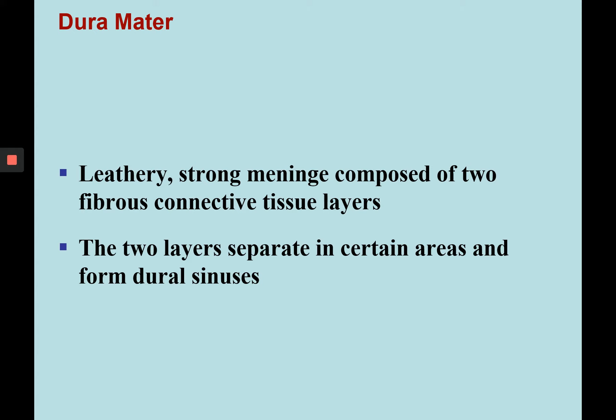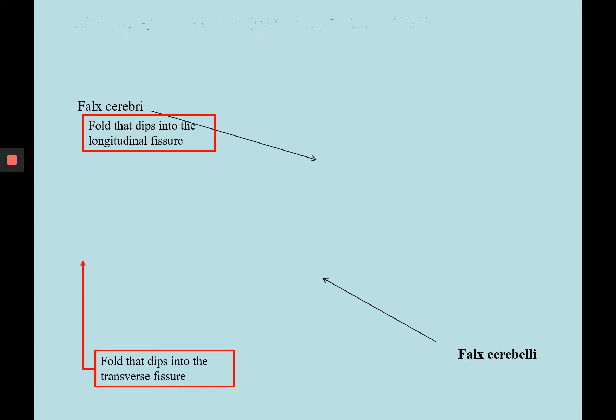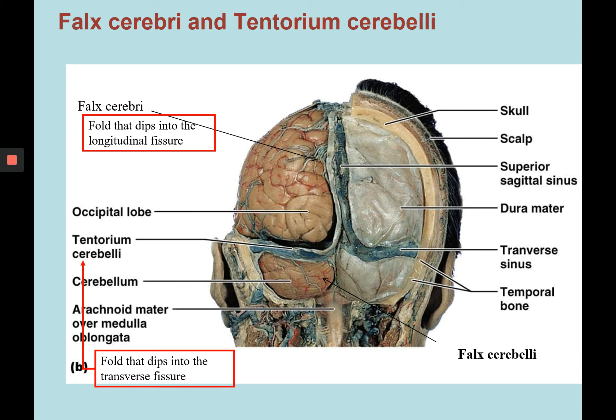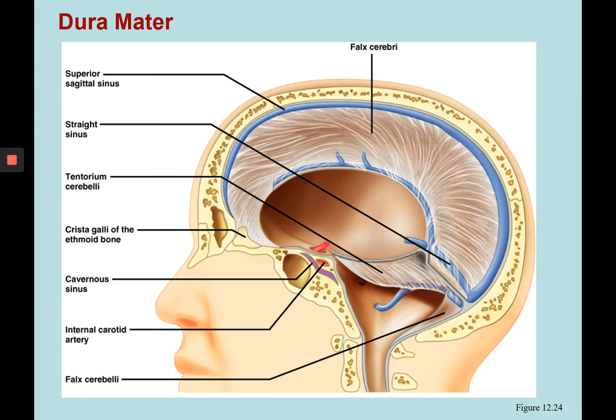The dura mater is the outermost meningeal layer — leathery, strong, and thick, composed of two fibrous connective tissue layers. The layers separate in certain areas to form dural sinuses filled with cerebrospinal fluid. Examples of dural sinuses that dip into large fissures include the tentorium cerebelli in the transverse fissure, and the falx cerebri, which dips into the longitudinal fissure. These are essentially enlargements or folds of the dura mater creating partitions in the skull.